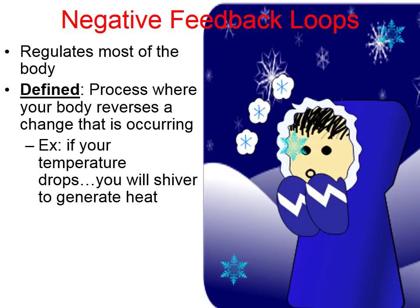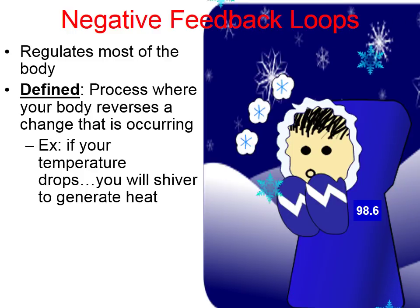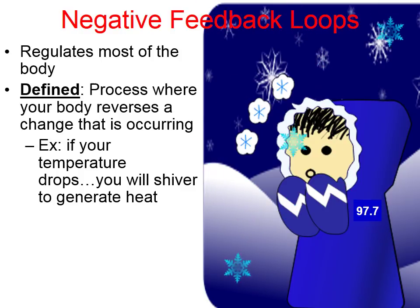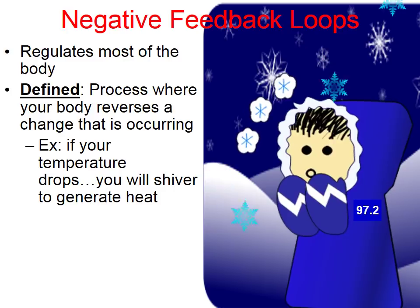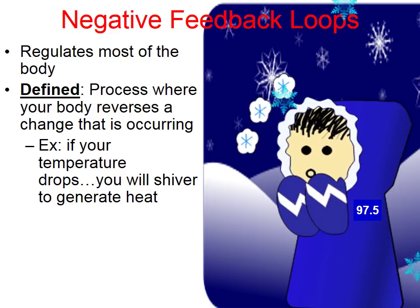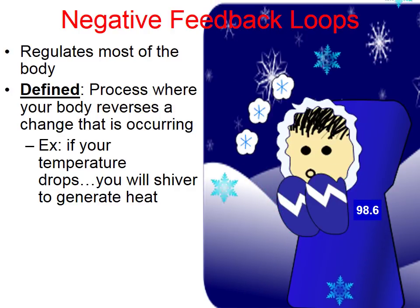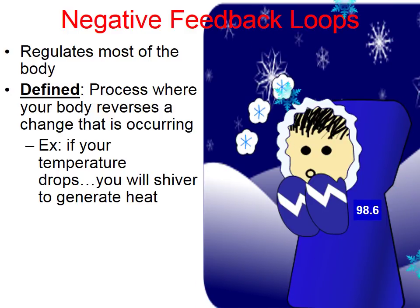In this animation, a child's been stuck outside in the cold. 98.6 degrees is our normal body temperature. As the child gets colder and colder, eventually they'll get so cold that their body begins to shake or shiver. Shaking and shivering is designed to generate heat — when your muscles stretch and contract rapidly, they rub on one another and generate heat, eventually warming you back up. This is an example of negative feedback: the change was that the kid was getting too cold, but negative feedback reversed the change and warmed him up.